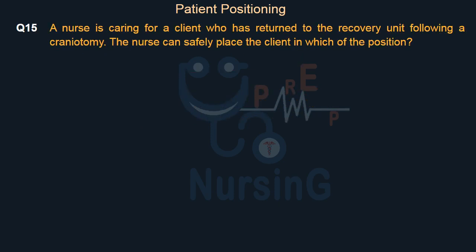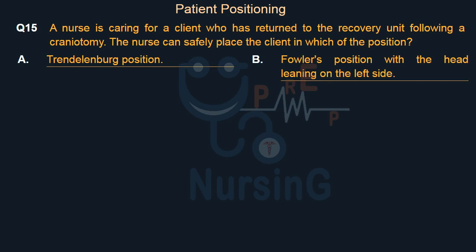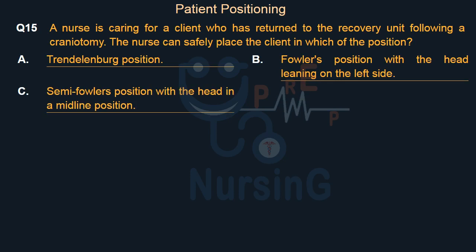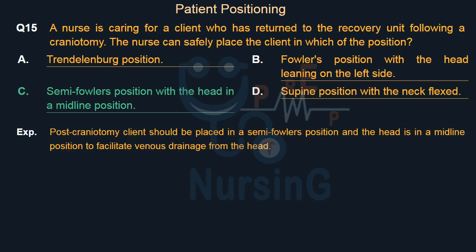A nurse is caring for a client who has returned to the recovery unit following a craniotomy. The nurse can safely place the client in which position? Option A, Trendelenburg position; Option B, Fowler's position with the head leaning to the left side; Option C, semi-Fowler's position with the head in a midline position; Option D, supine position with the neck flexed. The right answer is Option C. A post-craniotomy client should be placed in semi-Fowler's position with the head in midline to facilitate venous drainage from the head.